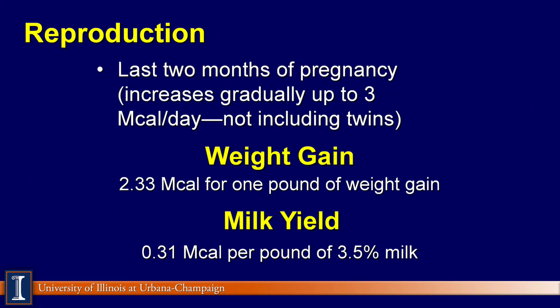A third choice the cow has to spend energy is reproduction, and this becomes a very large number, especially in the last 2 or 3 months of pregnancy — it increases gradually, day by day. That's been a new change in the NRC. These costs can be as high as 3 mega-cals a day for one calf. Currently in the U.S., we're seeing as high as 8 to 10% twin births, and that would increase that demand for energy as well.